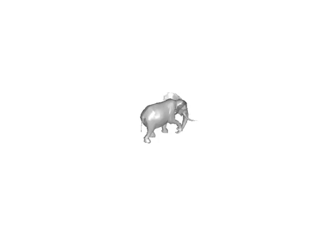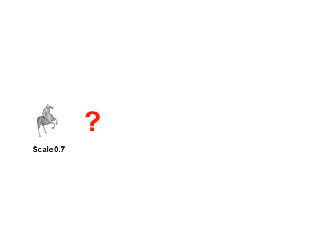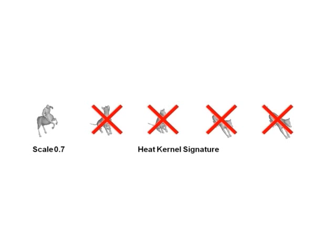We performed shape retrieval experiments on a database containing nearly 1,000 shapes. The queries included deformed as well as globally and locally scaled shapes. Using heat kernel signatures as local descriptors fails to correctly recognize scaled shapes. In this example, a scaled-down centaur is wrongfully matched to a dog.